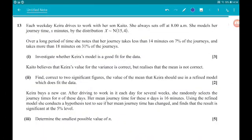Okay, number 13, more fun with the normal distribution. So each weekday, Kira drives to work with her son Kaito. She always sets off at 8am. She models her journey times, x minutes, by the distribution x is normally distributed with a mean of 15 and a variance of 4. Over a long period of time, she notices that her journey takes less than 14 minutes 7% of the time, and the journey takes more than 18 minutes 31% of the time.